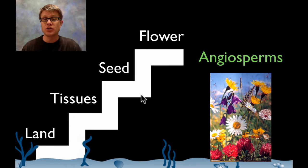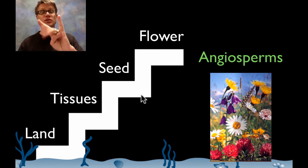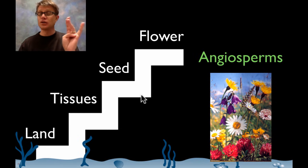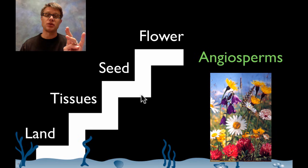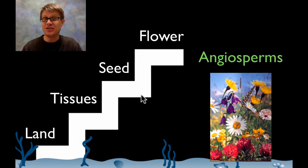Those four big groups again are the bryophytes, the ferns, the gymnosperms (example: the conifer, around during the dinosaurs), and finally the angiosperms. And so those are plants. I love plants because I eat them, or I eat things that eat plants. I hope that's helpful.